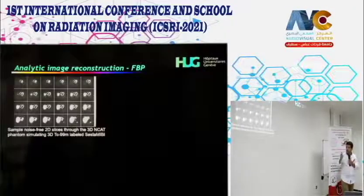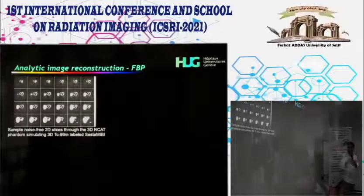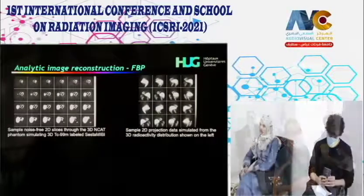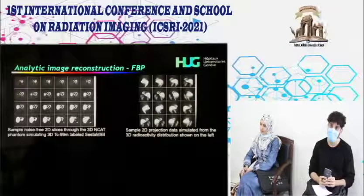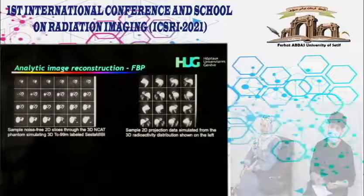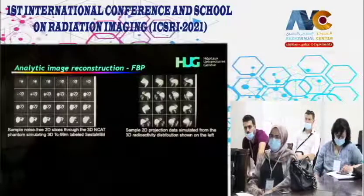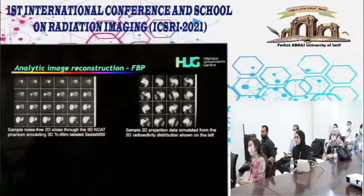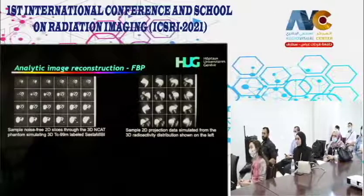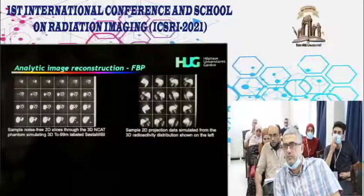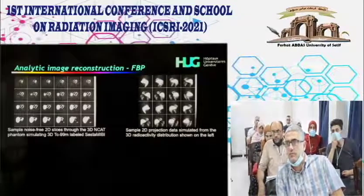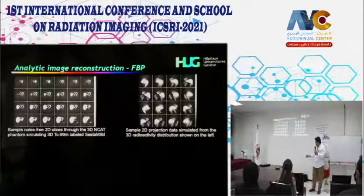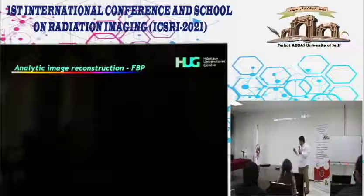For emission tomography, the XCAT phantom is a realistic representation of internal human organs, used to simulate tracer uptake and forward-project the biodistribution to generate artificial projections. We can then apply back projection only—showing the blurred result—or filtered back projection to evaluate reconstruction quality.